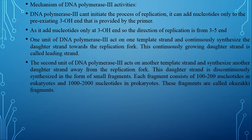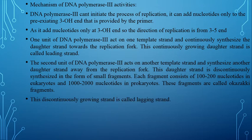DNA Polymerase 3 ka jo doosra unit hai, jo strand bana raha hota hai woh replication fork ki taraf elongate nahi hota, woh replication fork se away elongate hota hai. Woh discontinuously, chhote chhote fragments ki surat mein bana raha hota hai. Har ek jo fragment hai Okazaki fragment kehlata hai — ek Japanese scientist ke naam pe isko ye naam diya gaya. Okazaki fragment mein 100 se 200 nucleotide hote hain eukaryotes ke andar, aur 1000 se 2000 nucleotide prokaryotes ke andar. Yeh discontinuously growing strand jo replication fork se away ja raha hai isko lagging strand kehte hain.